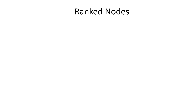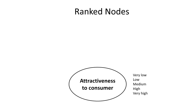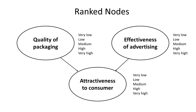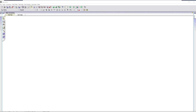When building real-world decision support systems using Bayesian networks, it's very common to have to model situations where the variables of interest have a ranked scale, like from very low to very high. It's also common for such variables to be dependent on a combination of other variables which are also on a ranked scale. For example, a company marketing a new consumer product might have attractiveness to the consumer as a variable on a ranked scale, dependent on quality of packaging and effectiveness of advertising. Whereas typically these situations are quite tricky to model in a Bayesian network, AgenaRisk's notion of ranked nodes makes this type of modeling incredibly easy.